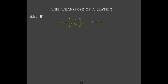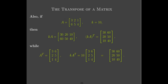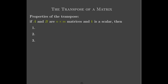Now let's take a matrix and a scalar — say k equals 10. I could multiply the matrix by that scalar and then form the transpose, or form the transpose first and then multiply by the scalar. In the end I get the same matrix, which tells me the transpose also has the homogeneity property.